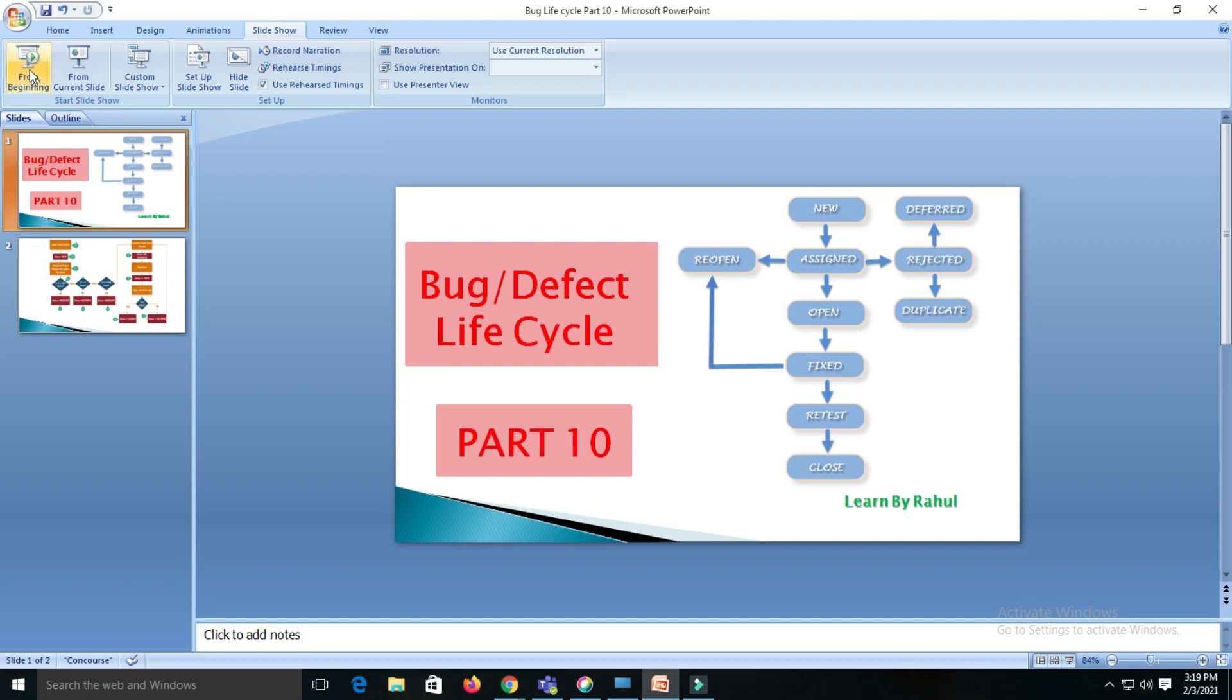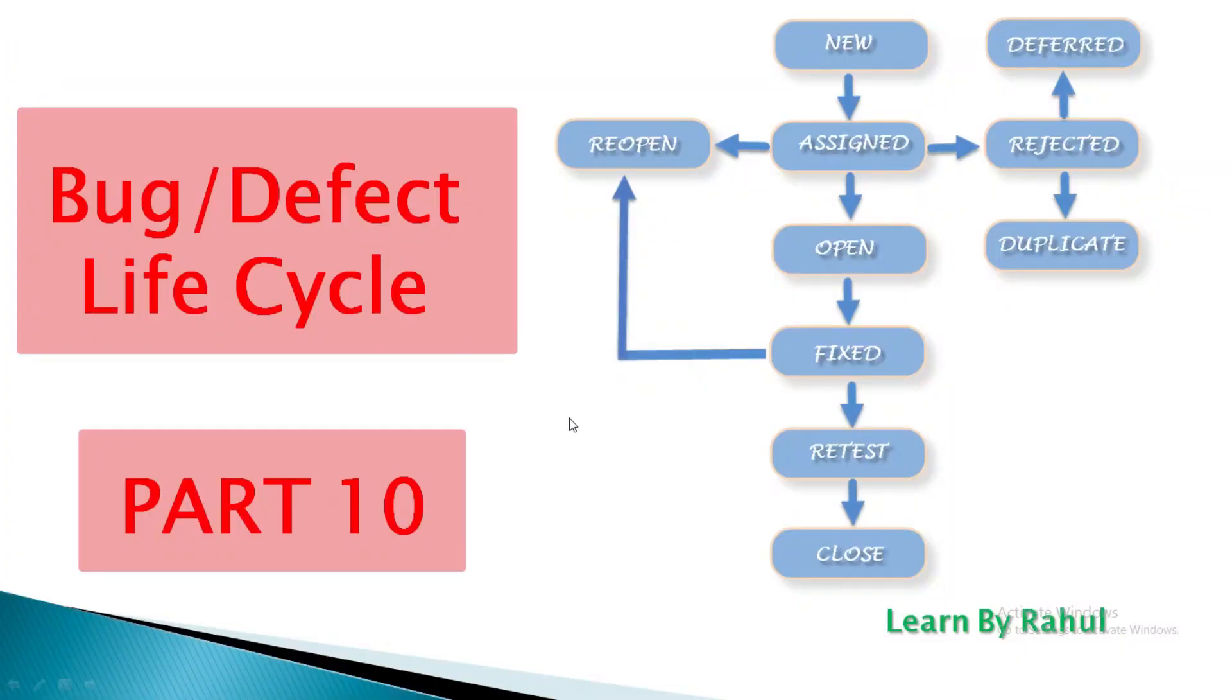Now we understand what bug defect lifecycle is. If any bug comes, it is assigned status as NEW when posted for the first time. Then the next status is ASSIGNED. Once the bug is posted by the tester, the lead approves the bug and assigns it to the developer team.